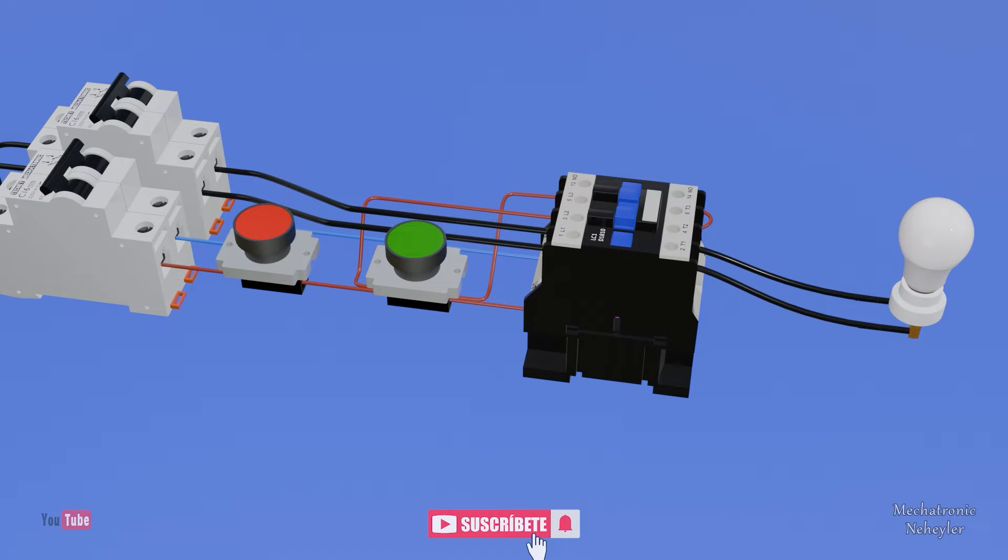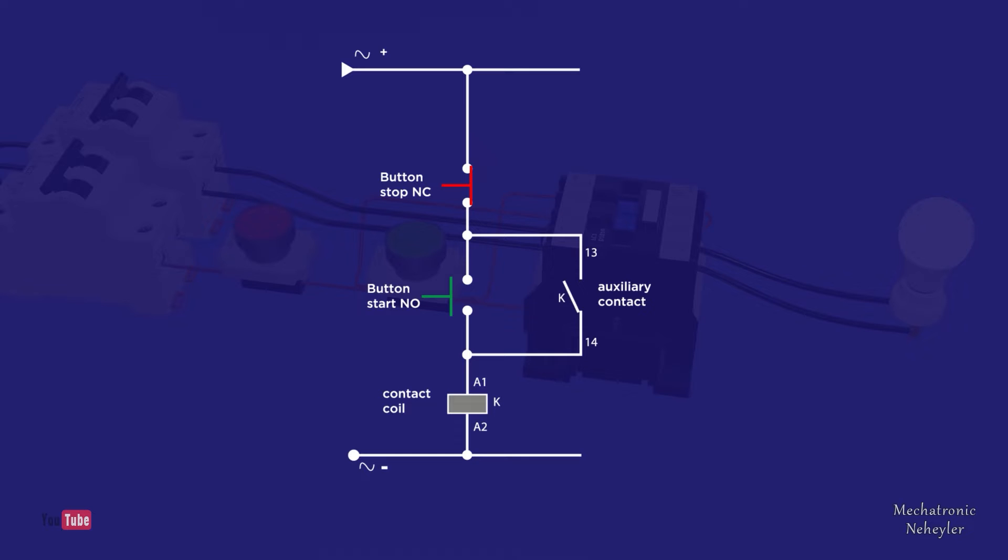The contactor, in its different terminals, can be connected in such a way that it remains energized by simply pressing a button. Previously, it is necessary to understand this circuit, which is the self-retention of the contactor shown in this electrical diagram, which is very easy to understand.